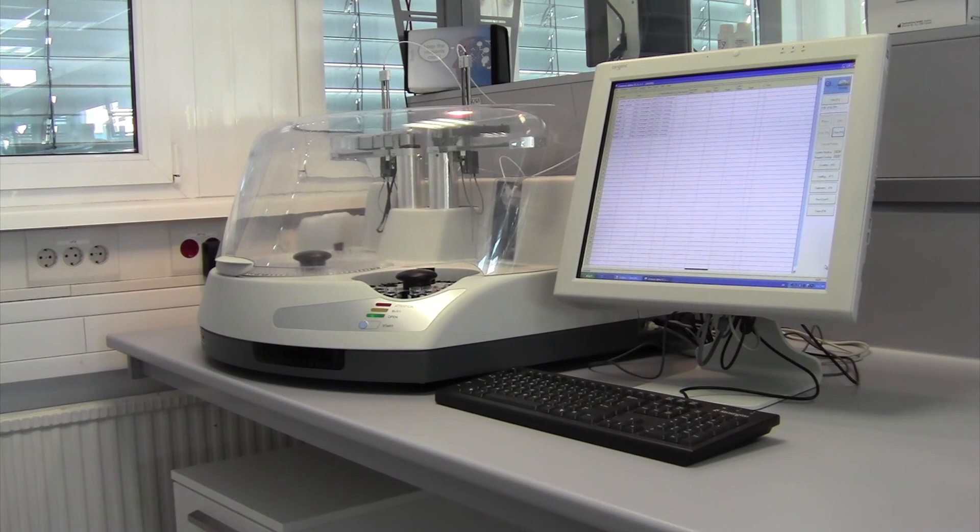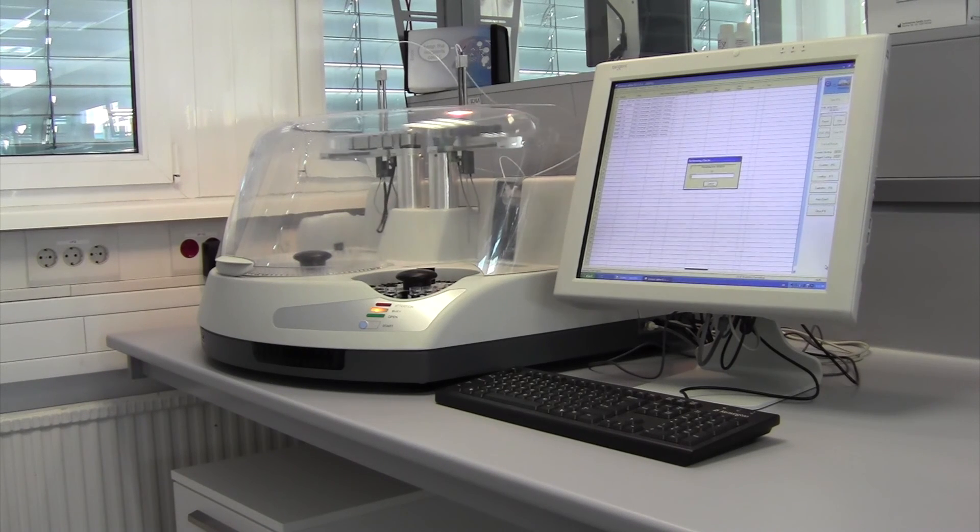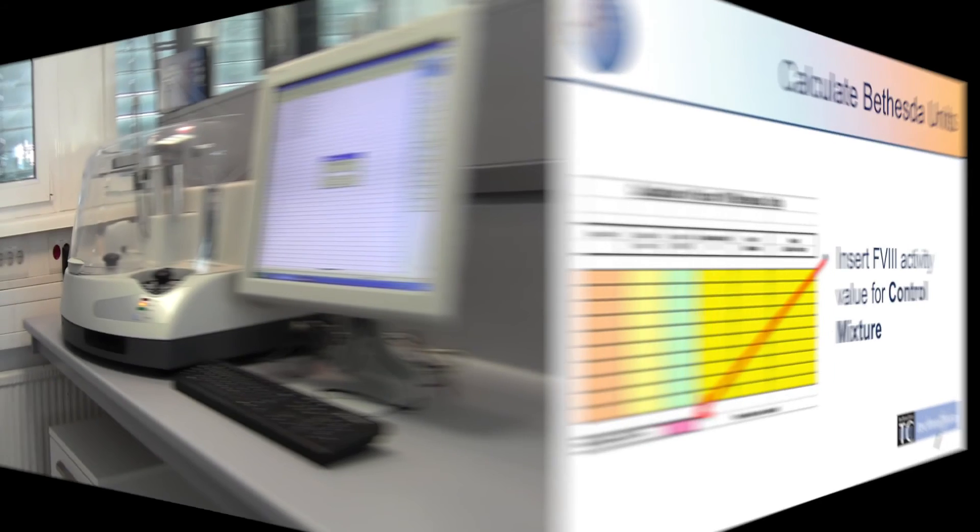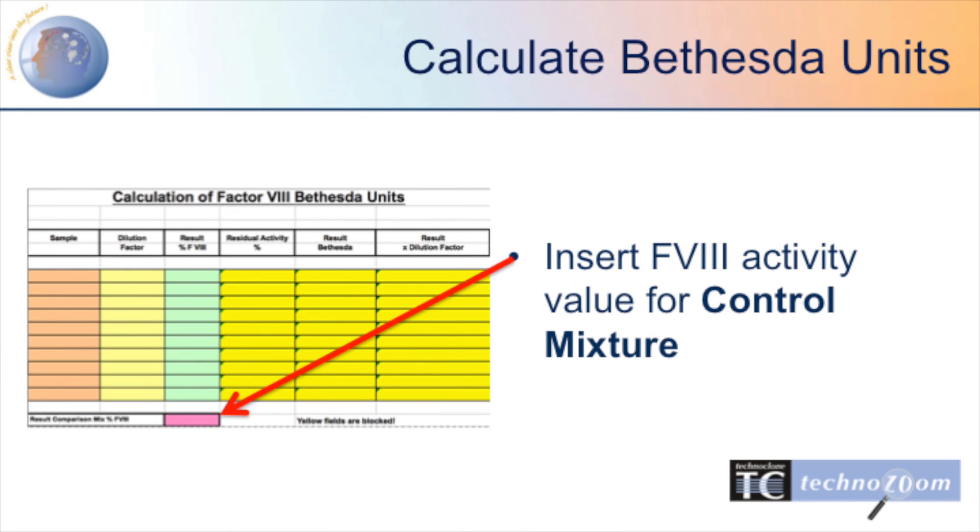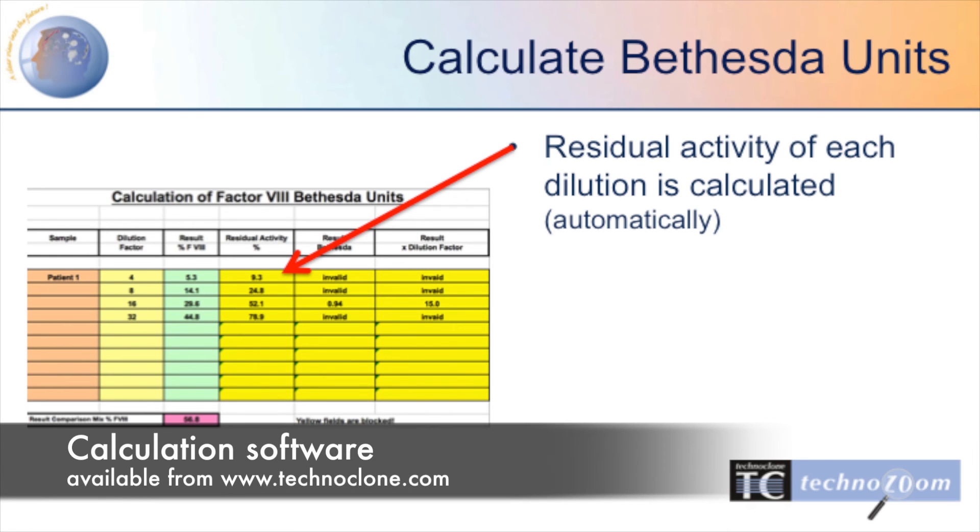Thereafter, you are ready to perform your Factor VIII inhibitor assay on your coagulation analyzer or analyzer reader. The reported inhibitor value can be calculated with our calculation software available on our website.